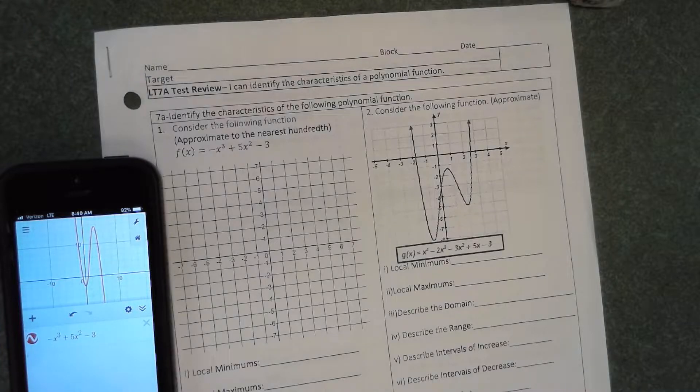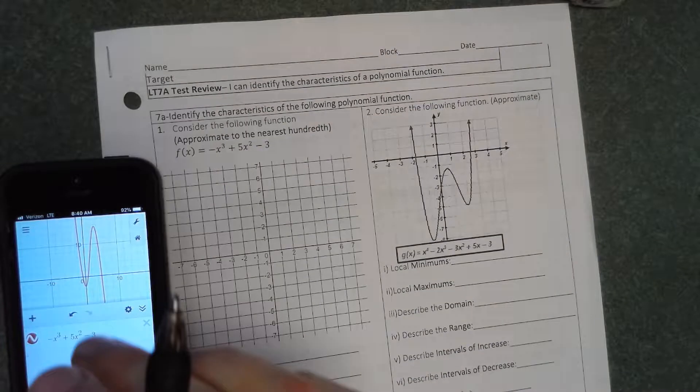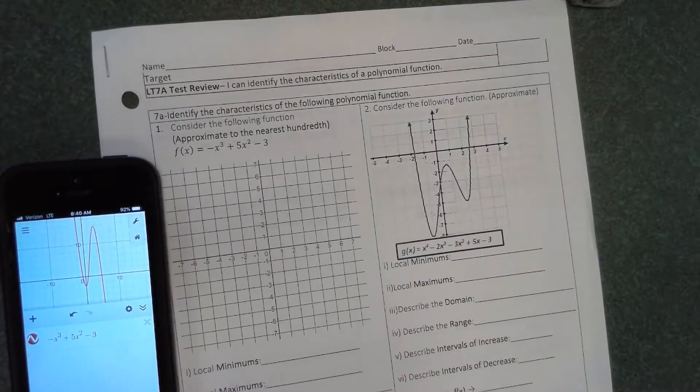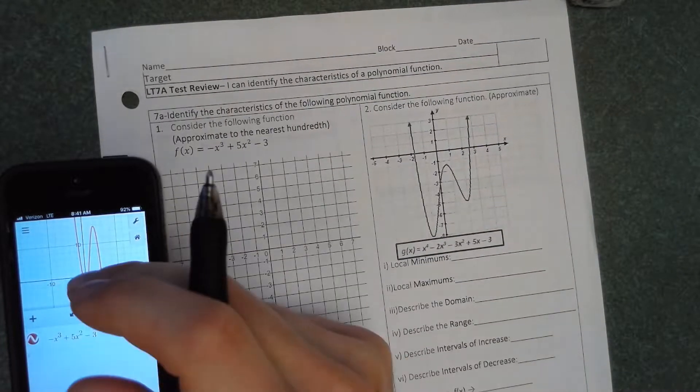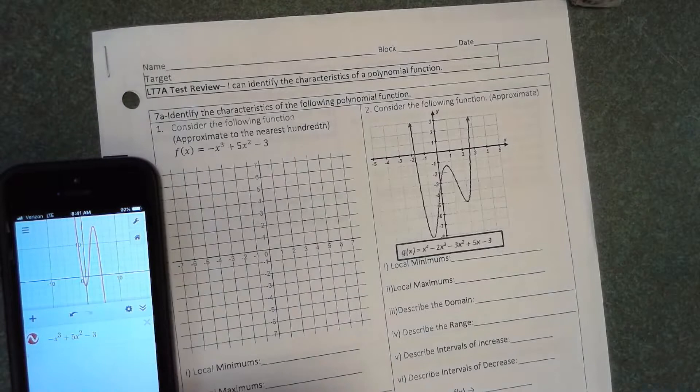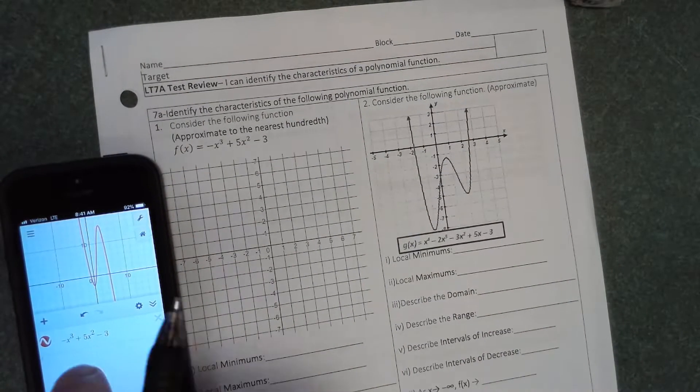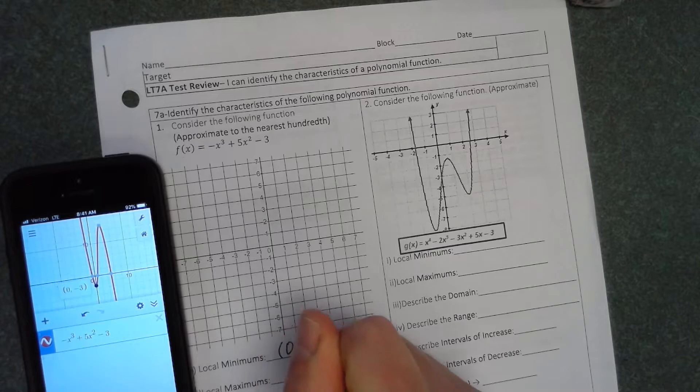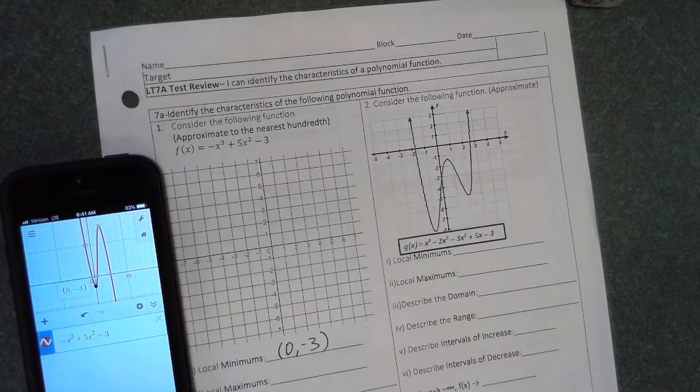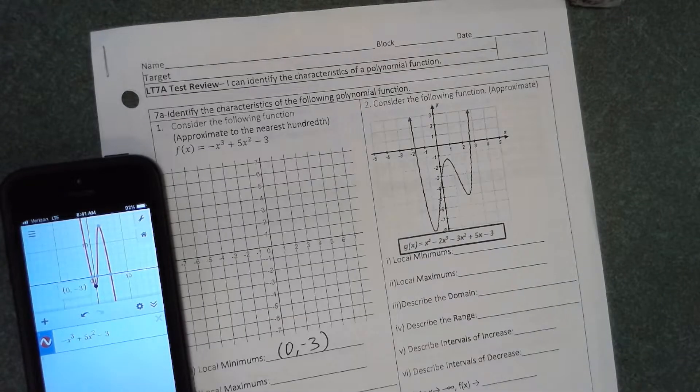We're looking for local minimums. These are not total absolute minimums of the graph, but minimums within parts of the graph. So we're looking at this little minimum point here at 0, negative 3.